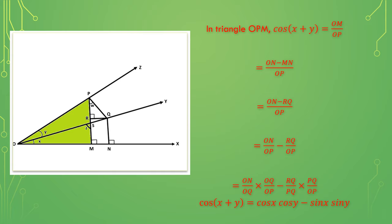In the triangle PRQ, since angle w equals angle x, RQ by PQ can be written as sin x into PQ by OP. PQ by OP means we can write it as sin y. Therefore, we got cos(x + y) equals cos x cos y minus sin x sin y.